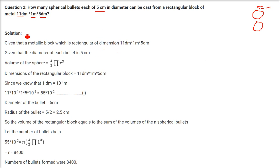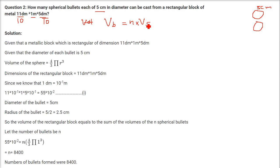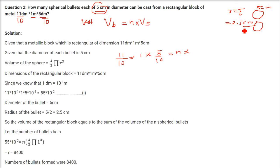We will convert everything to meters. The 11 decimeters — divide by 10 to get meters. The volume of the block, let's say VB, has to equal the number of spherical bullets N times the volume of one spherical bullet VS. The volume of the block is (11/10) × (1/1) × (5/10). The diameter is 5 cm, so the radius is 2.5 cm, which we convert to 0.025 meters.